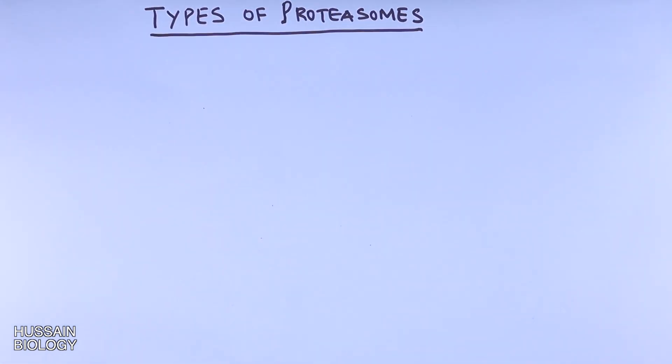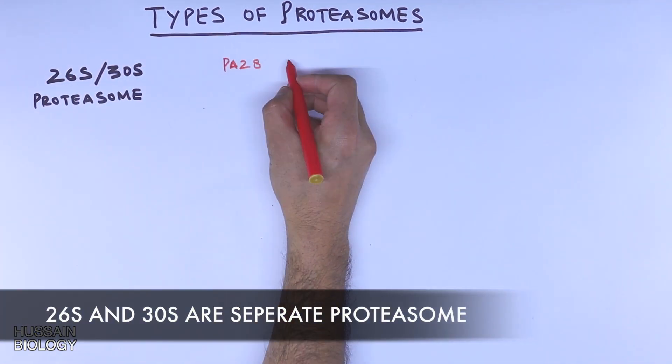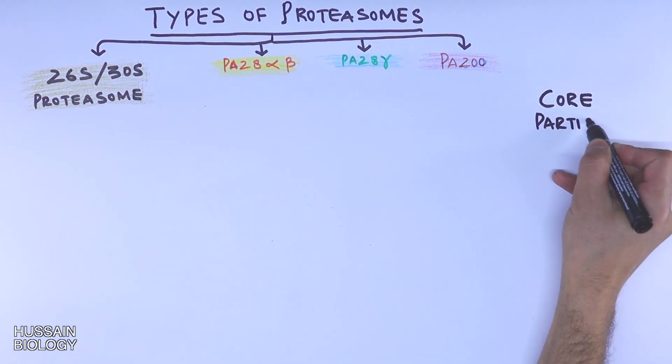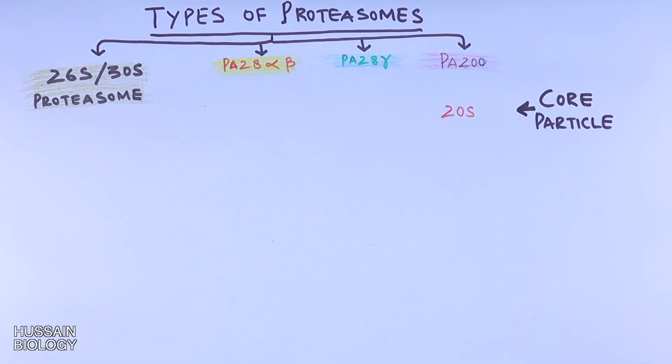First we have the 26S or 30S proteasome, second is the PA28 alpha beta proteasome, third is the PA28 gamma proteasome, fourth one is the PA200 proteasome. In all these proteasomes the core particle is the 20S proteasome.